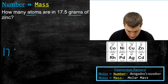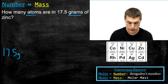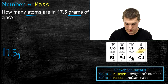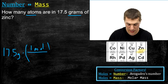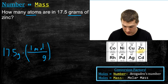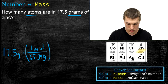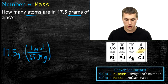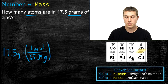Starting with 17.5 grams, the first step is to go from grams to moles — that's always the first step when going from grams to atoms. When going grams to moles, I use the molar mass from the periodic table. For zinc, the molar mass is 65.39. So in my conversion factor, I put 1 mole up top and grams on the bottom, plugging in 65.39. That takes me from grams to moles.